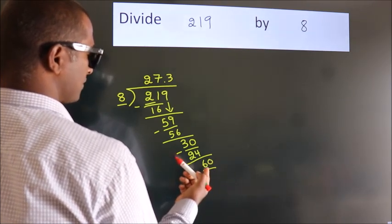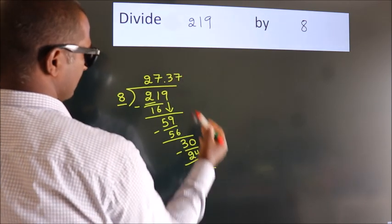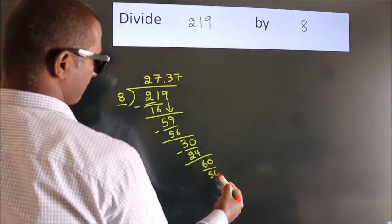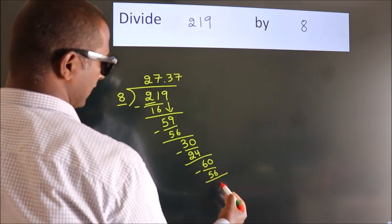A number close to 60 in the 8 table is 8 sevens, 56. Now we subtract. We get 4.